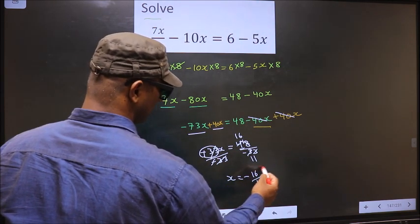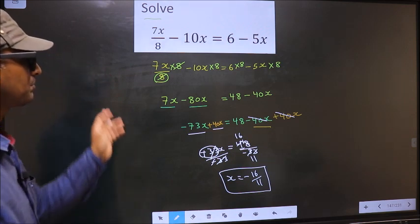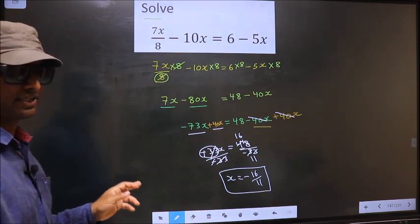So we got x equals minus 16 by 11 is our answer. Am I clear?